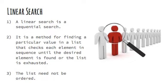First up is linear search. Linear search is nothing but a sequential search for finding a particular value in a list which checks each element in the list sequentially.